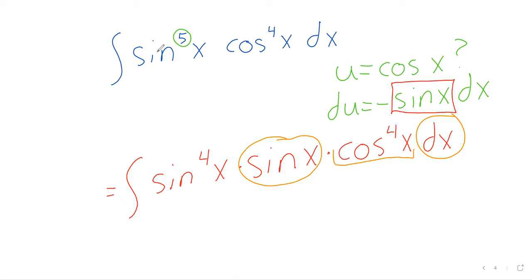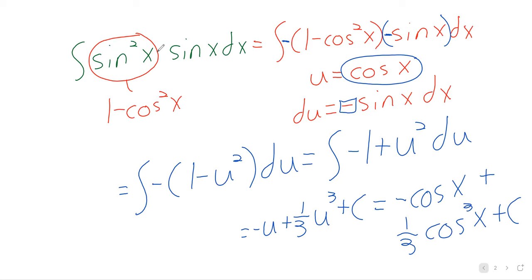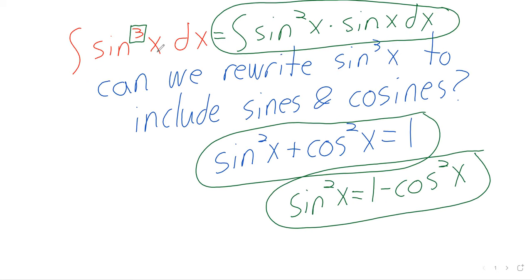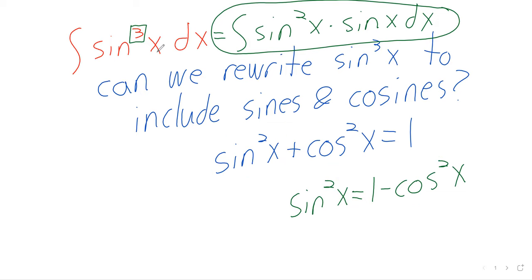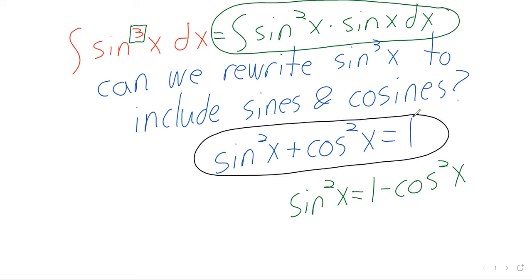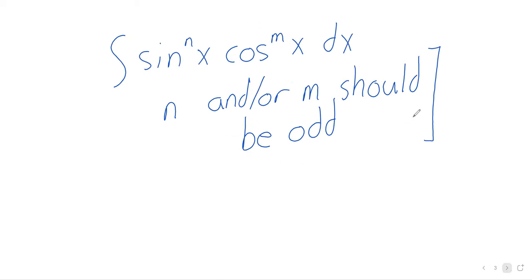What about the sine to the fourth though? Here's where we'll use the Pythagorean identity once again. Using the Pythagorean identity is going to involve a bit of a frame, because it relates sine squared and cosine squared, and we don't have sine squared — we have sine to the fourth.